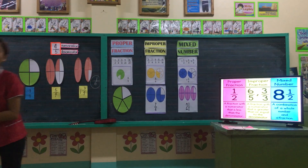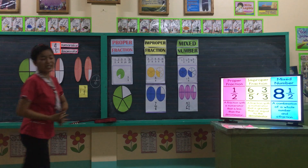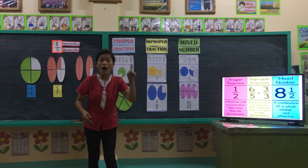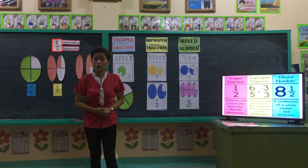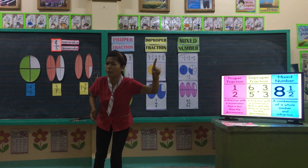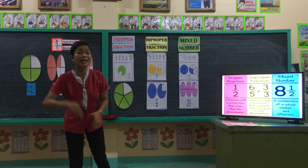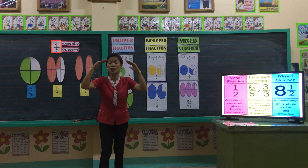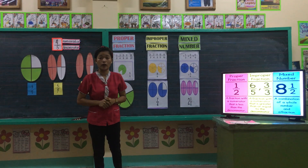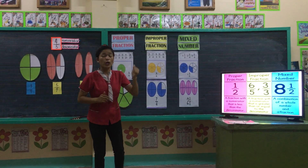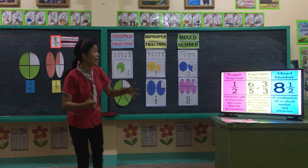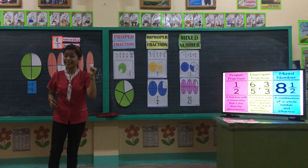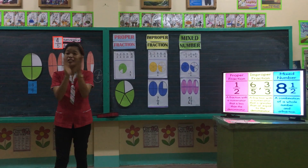Okay, thank you kids. What is our topic this morning? I will ask you again. What fraction whose numerator is less than the denominator? Is it proper or improper? Very good — that is proper fraction. And what fraction whose numerator is a bigger value compared to its denominator? That is improper fraction. And lastly, it is a combination of a whole number and a proper fraction — that is a mixed number. Very good, kids. Good job.